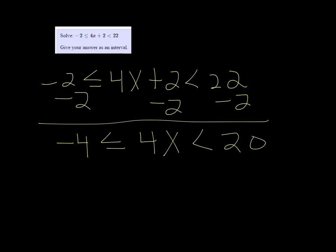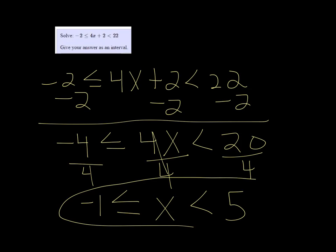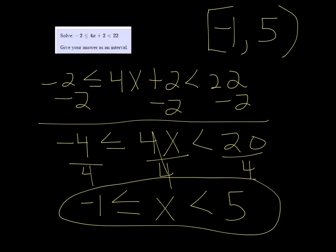And then we'll divide all three parts by 4. So I get negative 1 is less than or equal to x, which is less than 5. In interval form, that would be negative 1 in brackets because of the equal to, comma 5 parentheses.